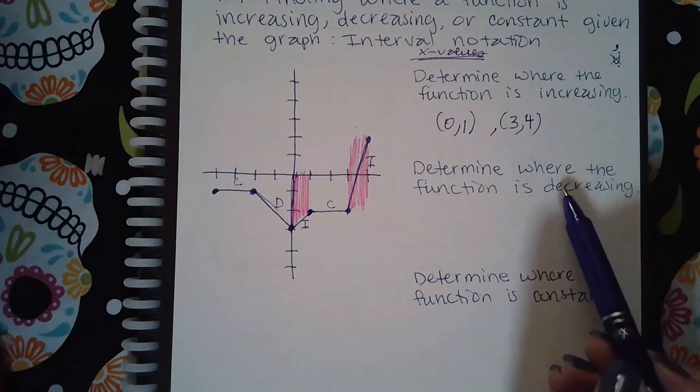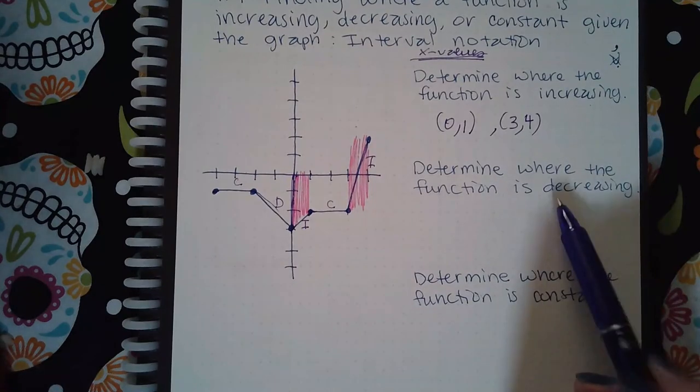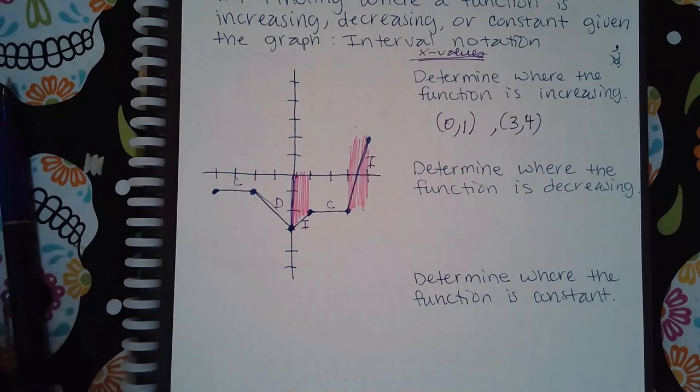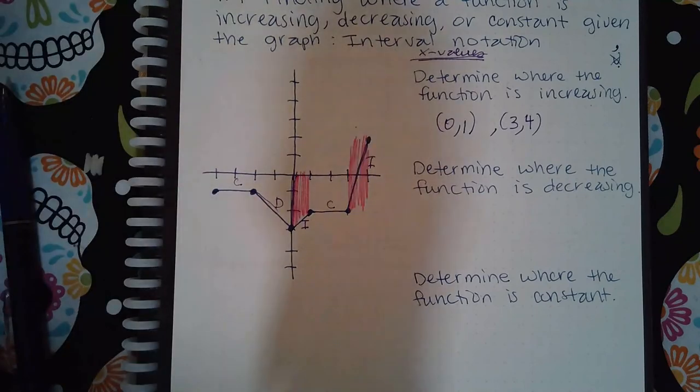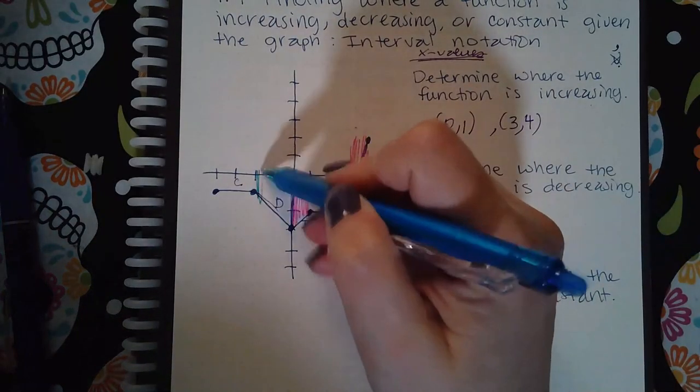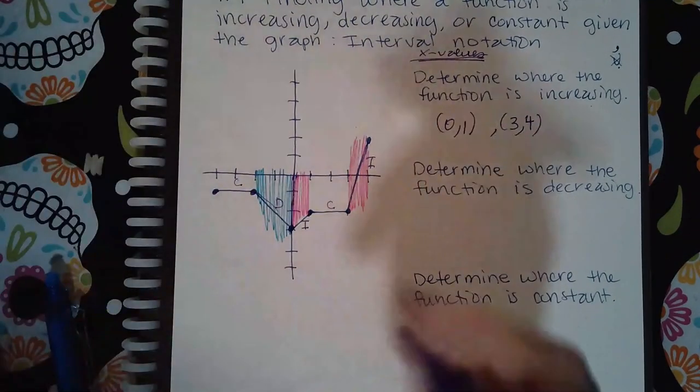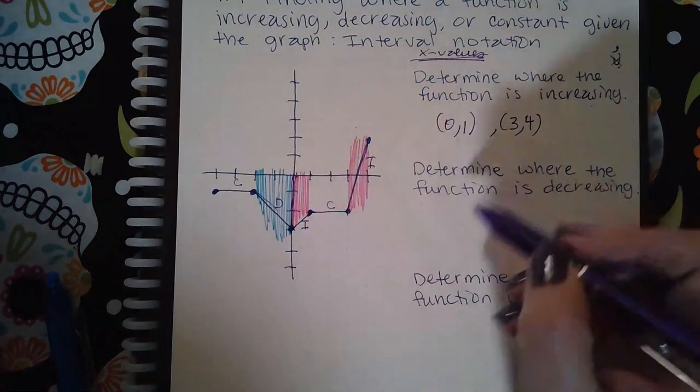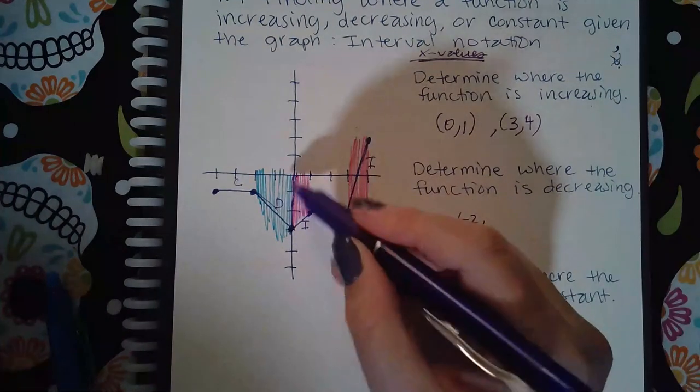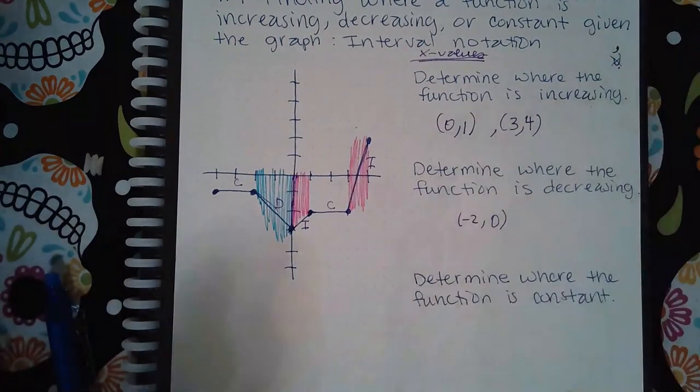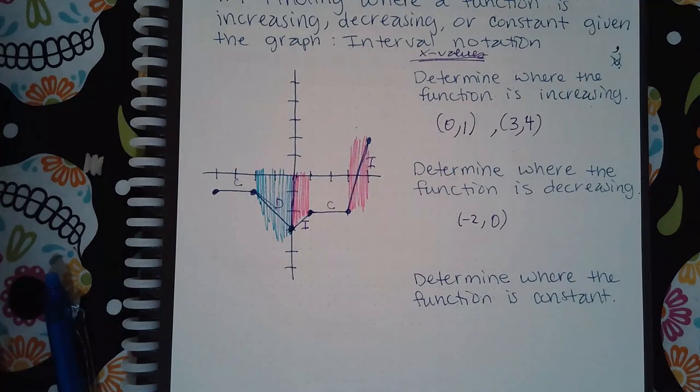The second section asks me to determine where it's decreasing. Well, that only happens in this one section which is here. I need to use the x values for that section, so this x value is negative two and then that x value is zero. It's the only interval where it is decreasing.